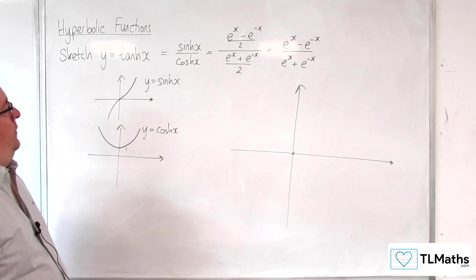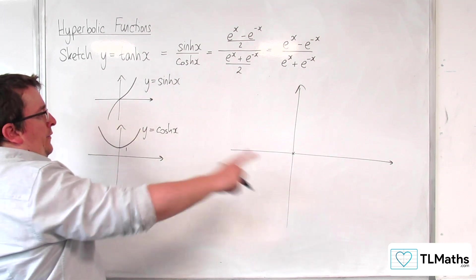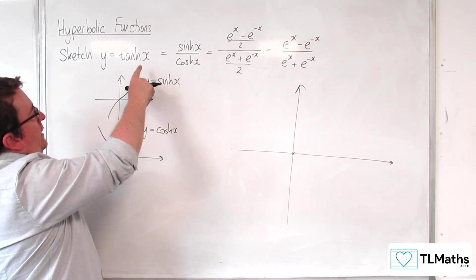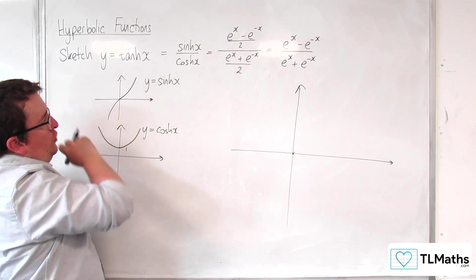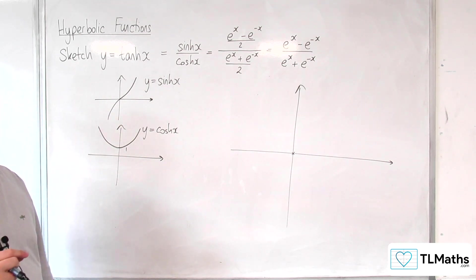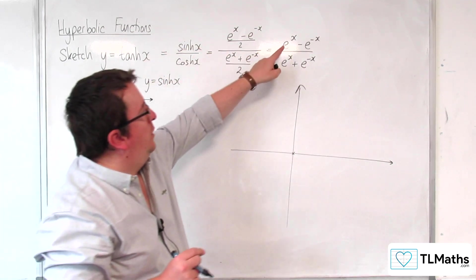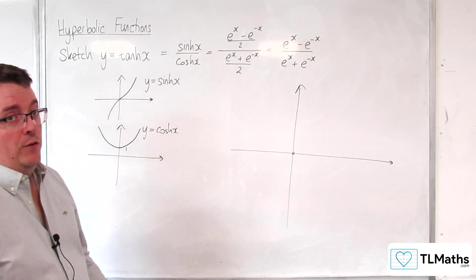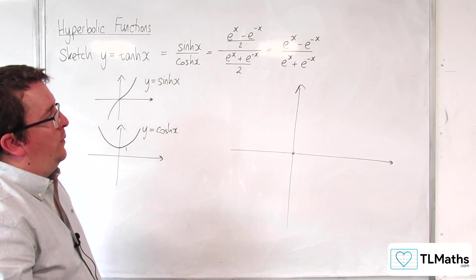Now, as x increases, we can see that sinh of x gets larger and larger and larger, and cosh of x gets larger and larger and larger. So actually what we've got is something that is tending to infinity on the top and tending to infinity on the bottom. So that's quite difficult to consider as to what is actually going on there.